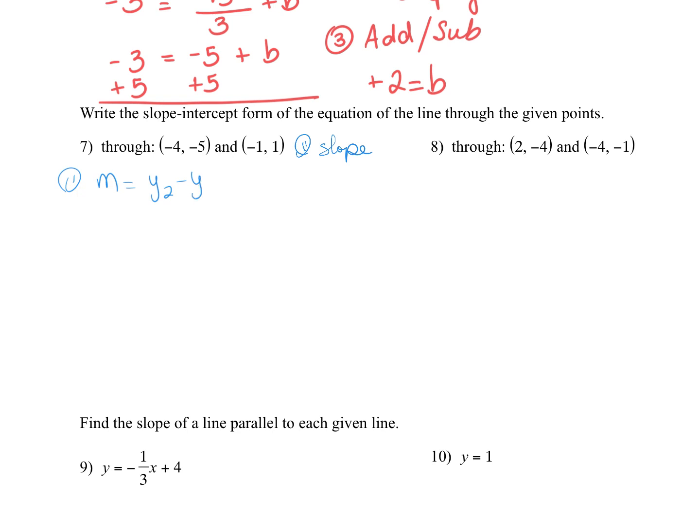So remember, it's the difference in the y values over the difference of the x values. And I do like setting up my template first, so we don't accidentally confuse a negative with a subtraction sign. So this is x and y, this is x and y. So my two y values are -5 and positive 1. My x is -4 and -1.